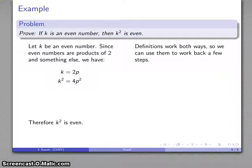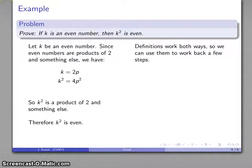And again, here's why definitions are useful. They work in both directions. So, forward direction, k is even. So I know k is 2p. Backward direction, I know k squared is even. I can take a step back and I know that k squared is a product of 2 and something else.